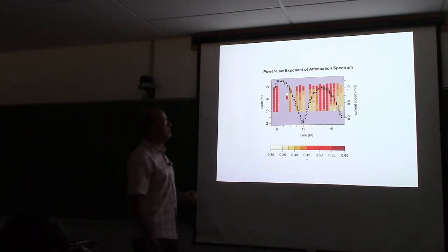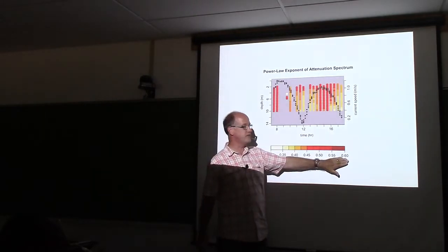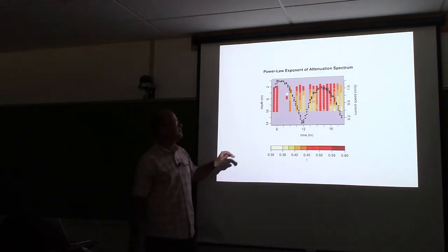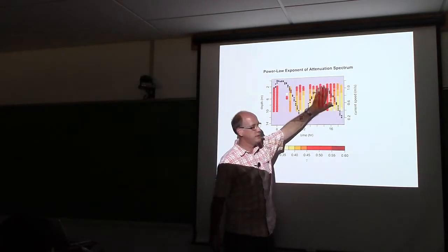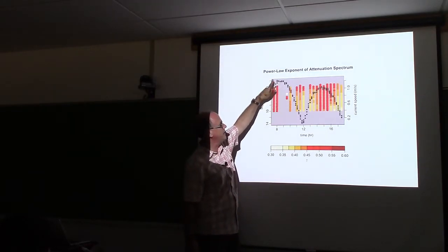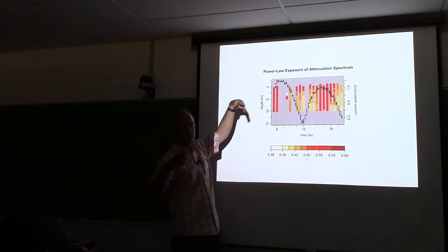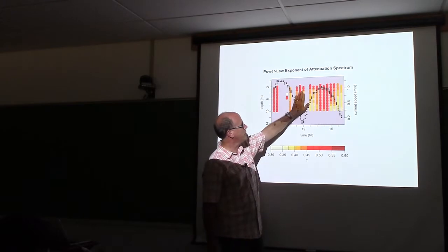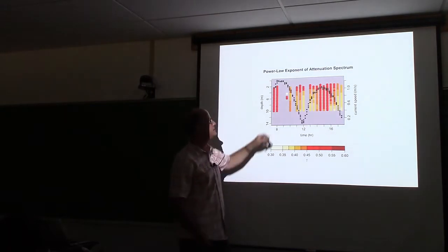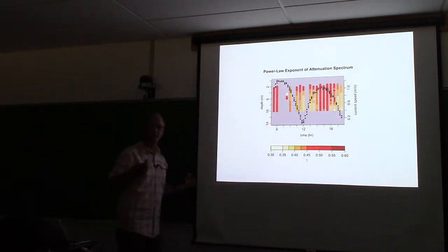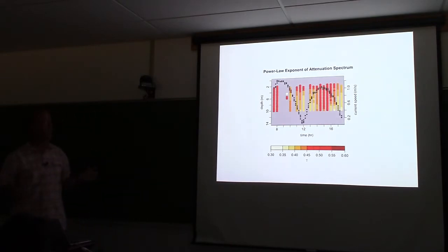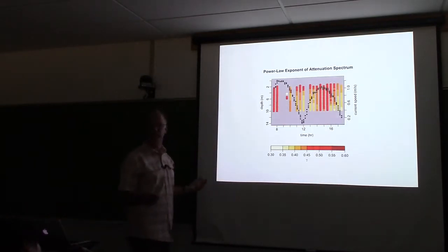Looking at the power law exponent gamma of the attenuation spectrum: high gamma means small particles, low gamma means large particles. We see a similar story - particles are really broken up with high gamma values at peak flood. We don't have data at peak flood because bubbles were getting trapped. At slack water we see bigger particles at depth due to flocculation, both at high slack and low slack water. In the surface layer where the big particles have been lost, you see higher attenuation spectra. These are two completely independent estimates - one from actual particle properties from the camera, one from optical properties - giving us the same story.